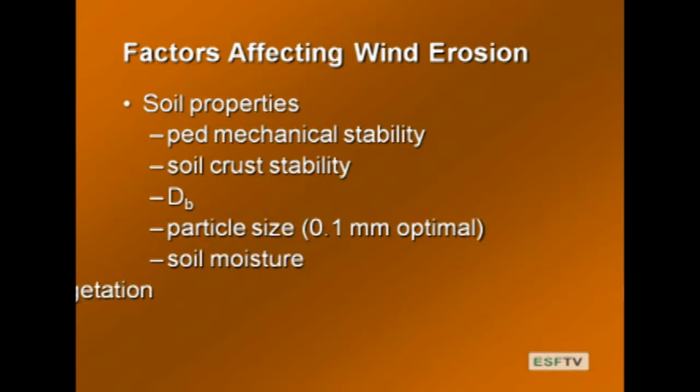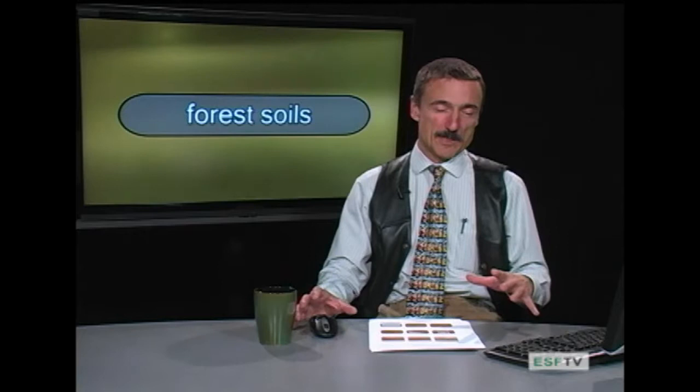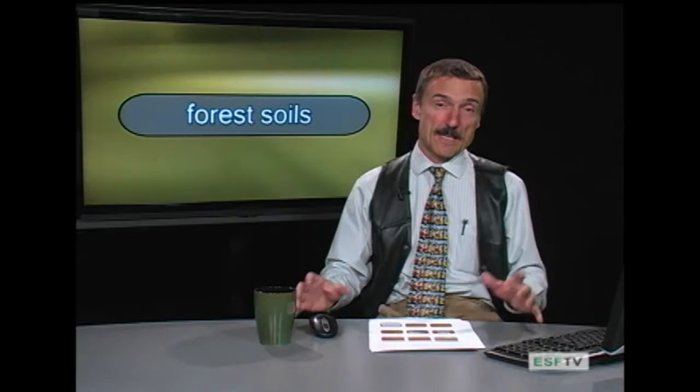Adding vegetation on top of all that: vegetation holds particles together, roots hold things together, and it protects the surface. Increased vegetation reduces the probability of wind erosion. Together — wind factors of velocity, turbulence, and soil factors of particle size, density, adhesion, aggregation, and vegetation — these give us a way to think about what's susceptible to wind erosion and what's not.